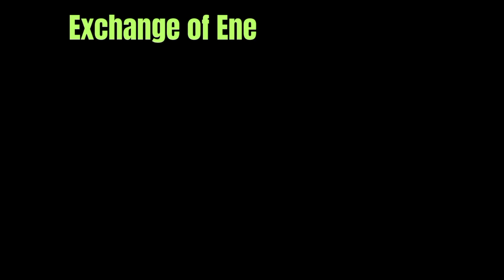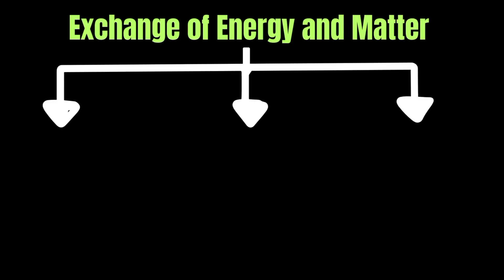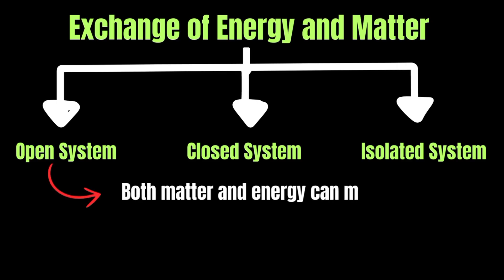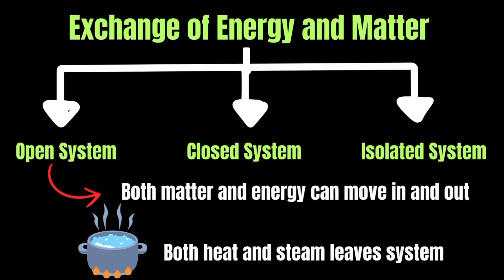Based on how a system exchanges energy and matter with its surroundings, we classify it into three types: open system, closed system, and isolated system. In an open system, both matter and energy can move in and out. For example, in a boiling pot of water, heat escapes and steam also leaves, which shows that both matter and energy are moving from the system.